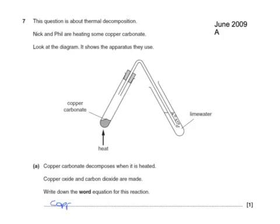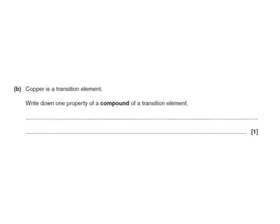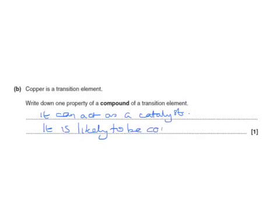The first part of this question is identical. We've got copper carbonate giving copper oxide plus carbon dioxide. But the second part is a little different. Here we've got copper as a transition element. Write down one property of a compound of a transition element. It can act as a catalyst will do. We might also say it is likely to be colored. Yes, it is colored or it's a catalyst or its compounds give colored precipitates.